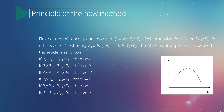First, set the reference quantities h and y. When pk is greater than pk-1, y equals 1; otherwise y equals -1. When pk+1 is greater than pk, y equals 1; otherwise y equals -1. When pk equals pk-1 and pk+1 equals pk, then y equals 0. h equals y1 plus y2.